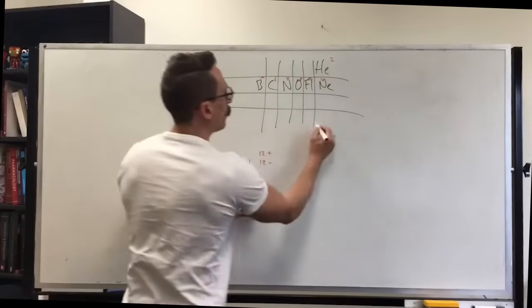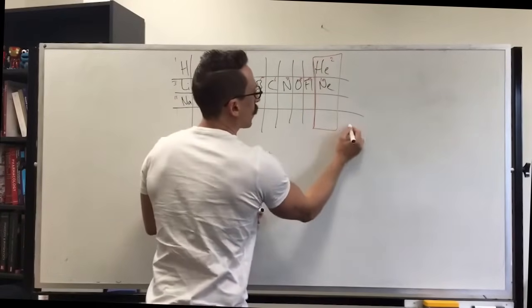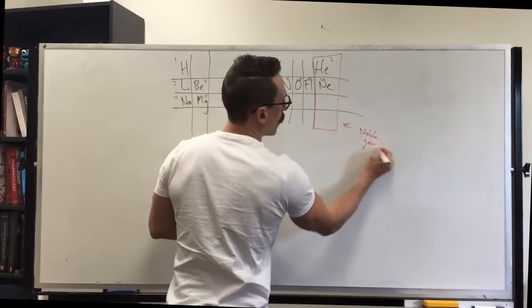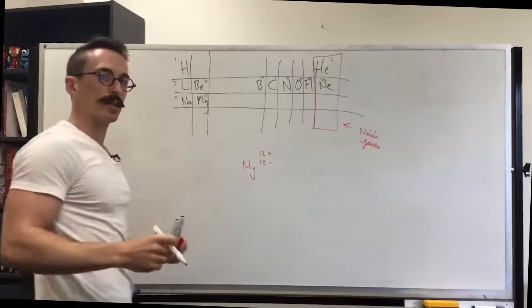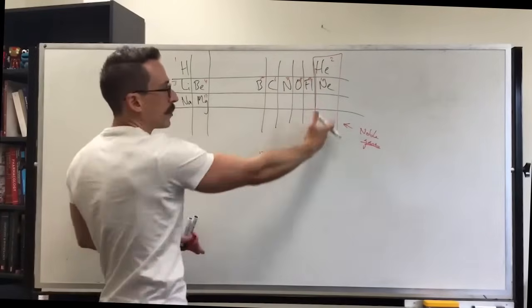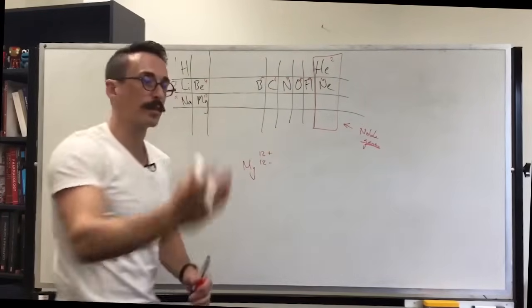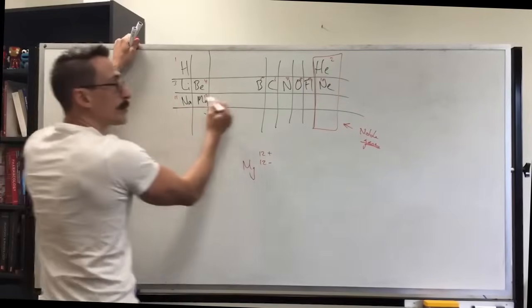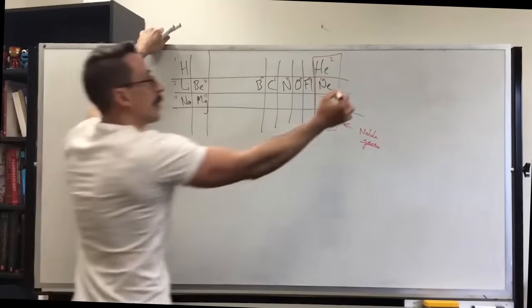This last row here, they're called the noble gases. They're noble. They love being like themselves. They're the high and mighty. Everyone wants to be like the royal society here on the very right hand side. That means magnesium, which is number 12, wants to be like its closest noble gas, which is neon.